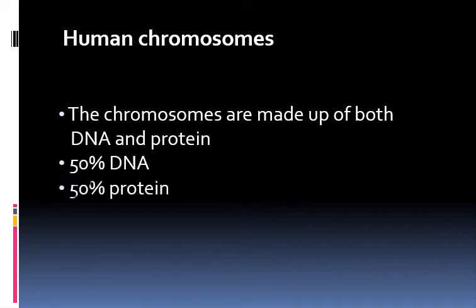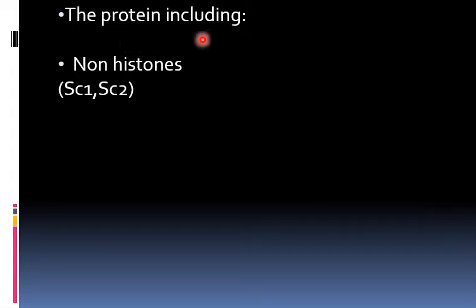Human chromosomes are made up of both DNA and protein — 50% DNA and 50% protein. The protein includes histone protein and non-histone protein. The non-histone protein includes two types: scaffolding-1 and scaffolding-2.